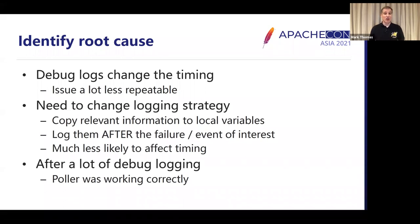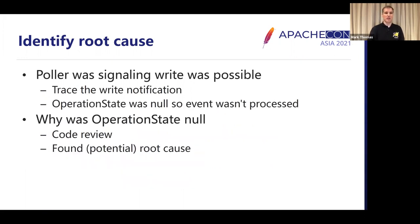After a lot of debugging — spending most of a day on this — my conclusion was actually that the poller is working perfectly correctly. That's good in one way, but not so good in that we haven't found the root cause. So we carry on. We can see that the poller is signaling that write was possible, so the semaphore should have been released. The next thing I started to do was trace the write notification, and as soon as I did that, it was blindingly obvious what was going wrong.